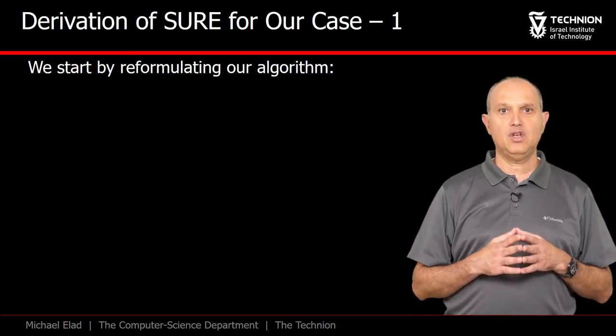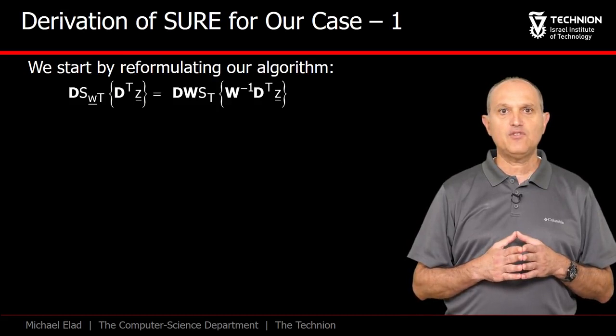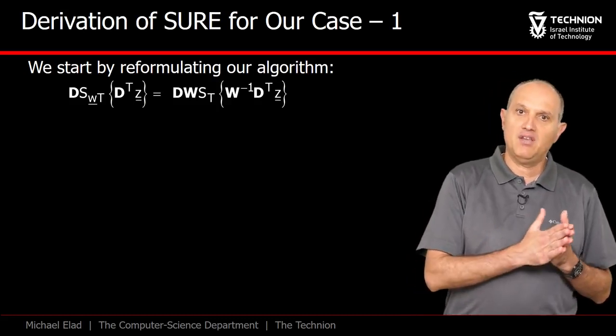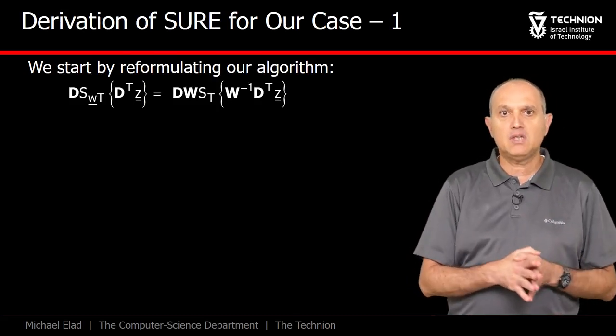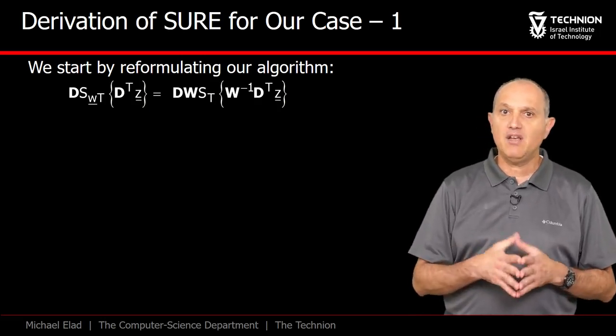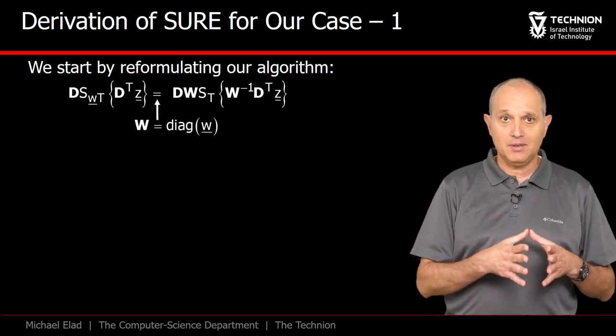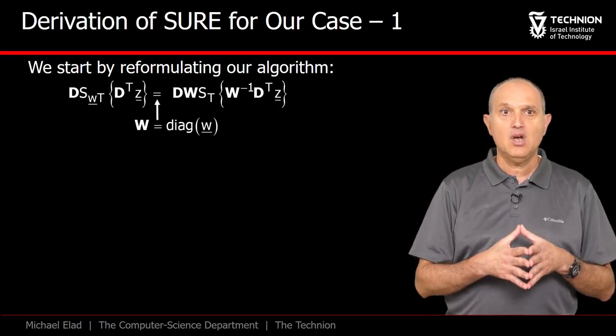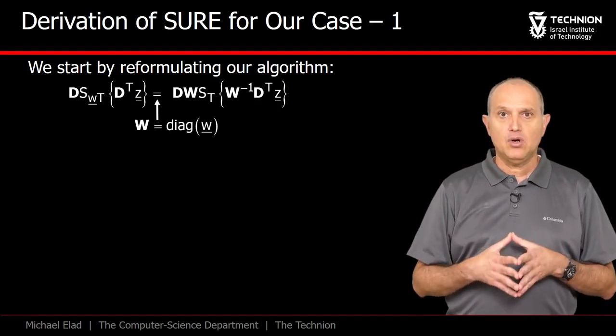Let's rewrite the denoiser expression so that instead of spatially varying thresholds, we pre-multiply by the inverse of W, and post-multiply by W, and in between apply a fixed threshold. Here, capital W is the diagonal matrix holding the atom norms on its main diagonal.